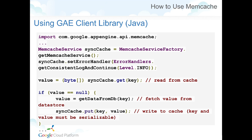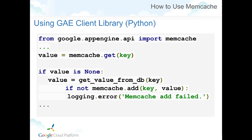Here is some Java sample code that explains the read flow. Similar to other App Engine services, you get the Memcache service object back and then start handling calls. You try to read from the cache, and if the value is there, return it. Otherwise, get the value from the Datastore and update the cache. Similarly, this is the Python code implementing the same read workflow. You can also implement the put operation for the write flow.